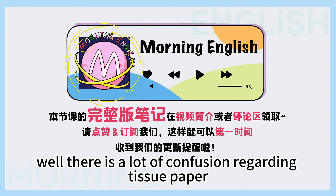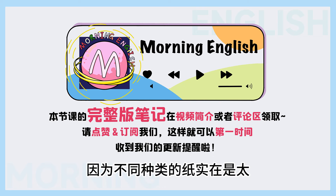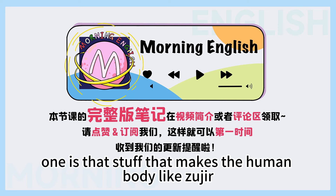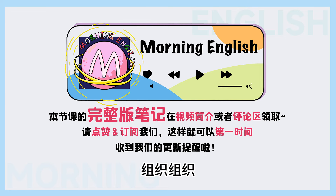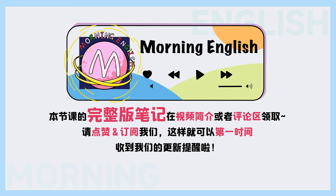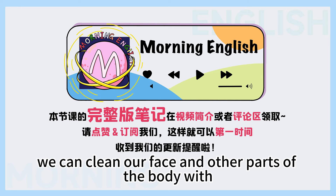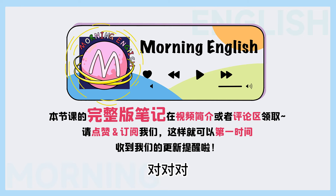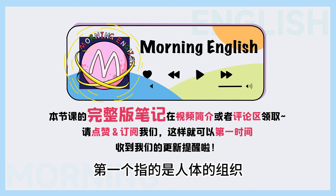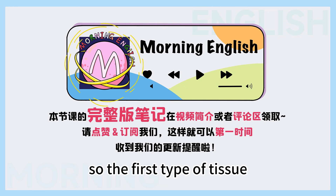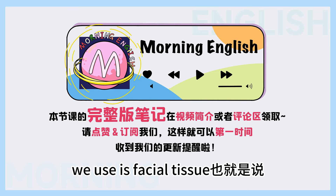There is a lot of confusion regarding tissue paper, because there are so many different types. The word 'tissue' can mean two things: one is the stuff that makes the human body — 组织 (body tissue); and the other is what we use to clean our face and other parts of the body. Tissue有两个意思: 第一个指的是人体的组织, 第二个呢就是指的纸巾。